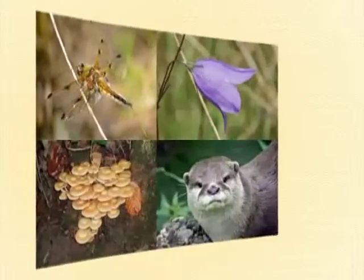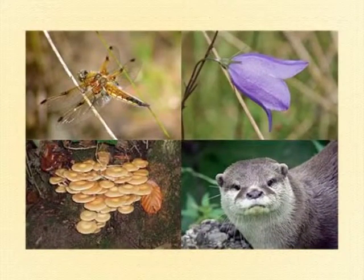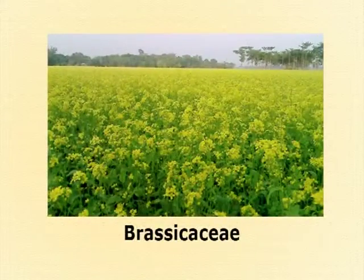We all know that planet Earth supports a rich diversity of living organisms, be that animals, plants, or microbes. Plants, being producers, are important because they provide us precious economic goods and ecological services. The different kinds of plants that inhabit our planet Earth have been classified into taxonomy categories called families. Of these various families, Brassicaceae, which is the topic for today's lecture, is an important family.